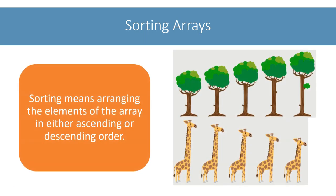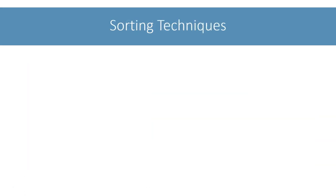Sorting means arranging the elements of an array in either ascending or descending order. When things are sorted, it makes it easier for us to find them quickly. We saw this in binary search, which works on sorted arrays and can find elements much faster than linear search. In programming, there are multiple ways for sorting.